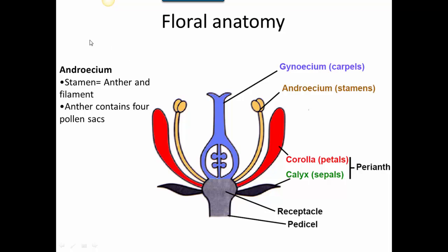Moving up into the fertile parts of the flower, we have the androecium — the male part of the flower — which is made up of stamens. The stamens are made up of the anthers at the top and the filament, which is the stalk that supports the anthers. The anther contains the pollen sacs; if you take a cross section through the anther, you would see it contains four microsporangia that generate the pollen.